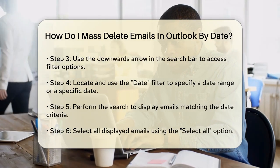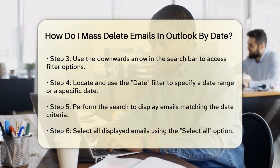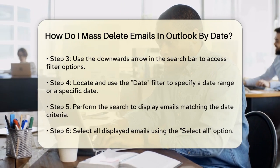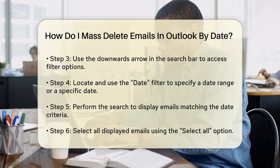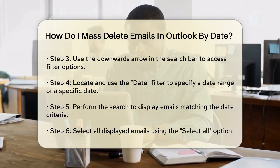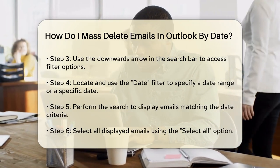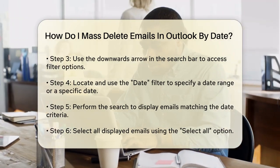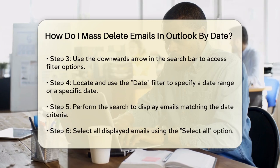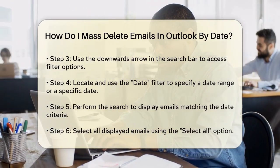Once Outlook performs the search, it will display only the emails that match your criteria. Now you need to select all these emails to delete them. You can do this by clicking on the Select All option at the top of the inbox. After selecting all the emails, click on the Delete button. Outlook will ask you to confirm, so make sure you're certain before proceeding. Click the OK button to complete the deletion.